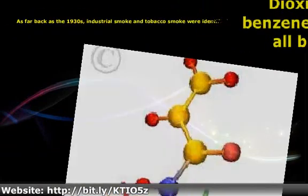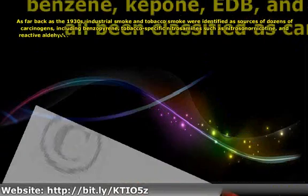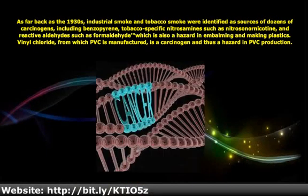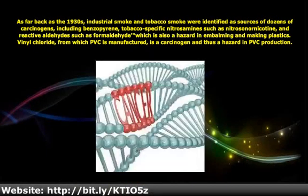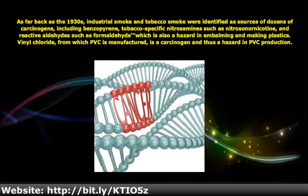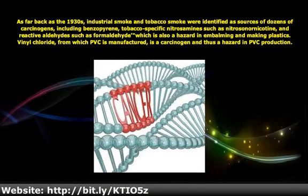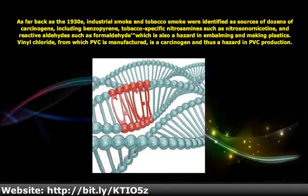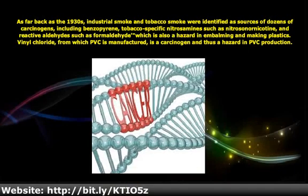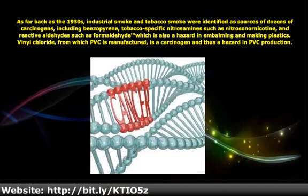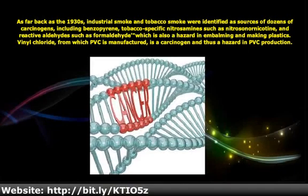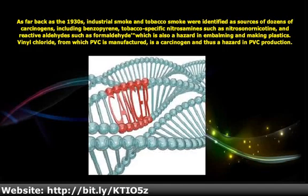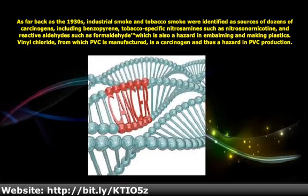As far back as the 1930s, industrial smoke and tobacco smoke were identified as sources of dozens of carcinogens, including benzopyrene, tobacco-specific nitrosamines such as nitrosonornicotine, and reactive aldehydes such as formaldehyde, which is also a hazard in embalming and making plastics.